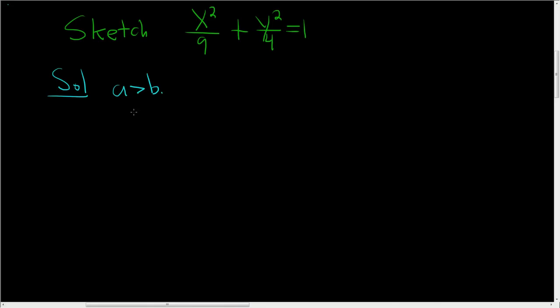So in an ellipse, a is always bigger than b. And to find a, you just take the square root of the bigger number. So 9 is bigger than 4, so a is the square root of 9, that's 3. And then b is the square root of the other number, which is the square root of 4, which is 2.